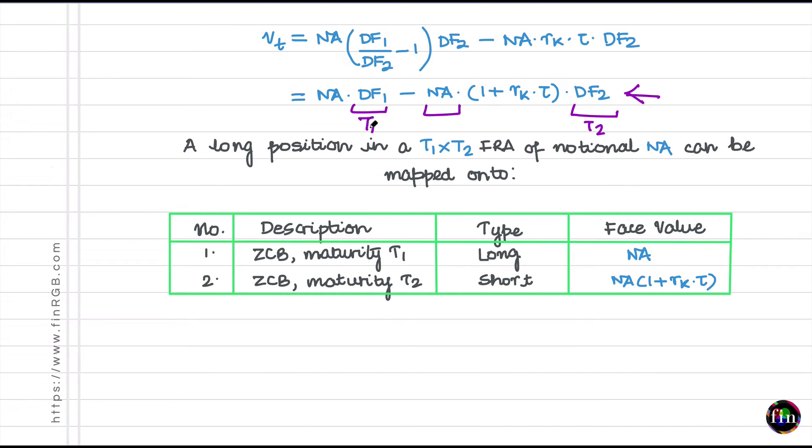ZCB of maturity T1 will be a long position because it is a plus here. What is the face value required? These many dollars. ZCB of maturity T2 will be a short position because there is a minus sign sitting here. What is the face value required? NA times 1 plus RK tau. I have summarized these two positions in this table.